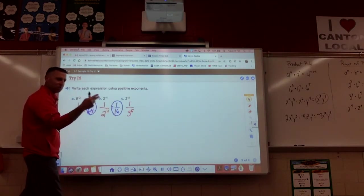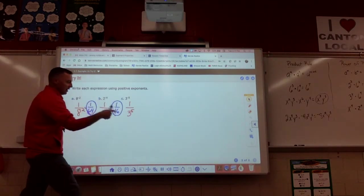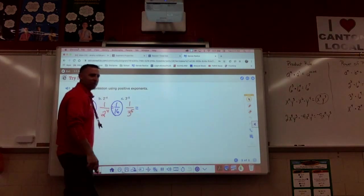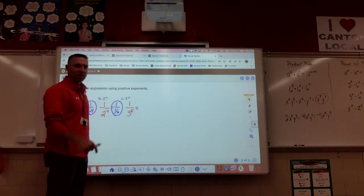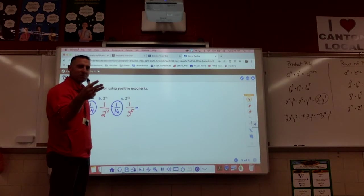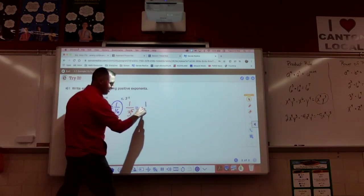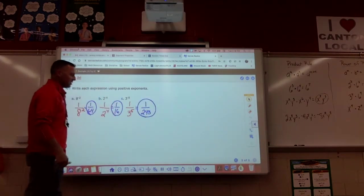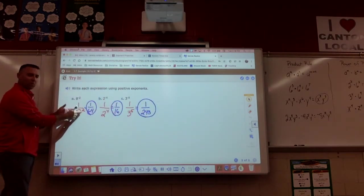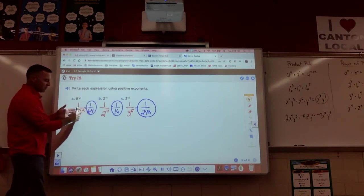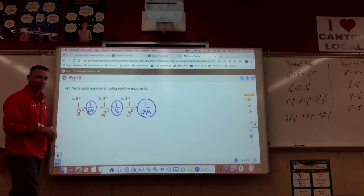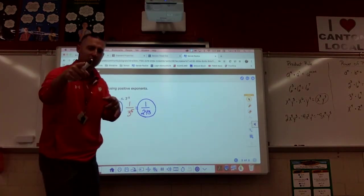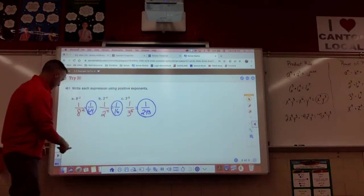We can also say one over two to the fourth is equivalent to one over 16. Two to the fourth power, two times two times two times two. One over three to the fifth. I'm going to have to ask Mr. Frickey on this. Three times three is nine, times three is 27, times three is 81, times three more is 243. So once again, we can write it with positive exponents. We can also simplify these positive exponents to be equivalent fractions. That's example two my friends, your introduction to negative exponents.